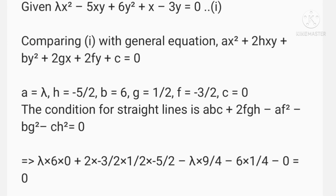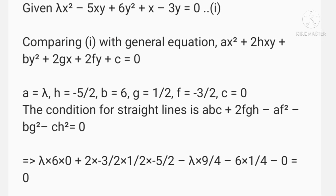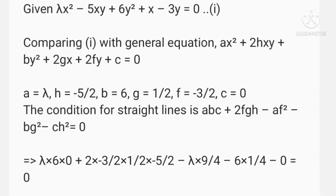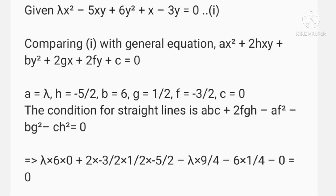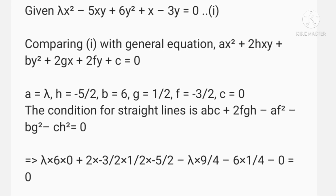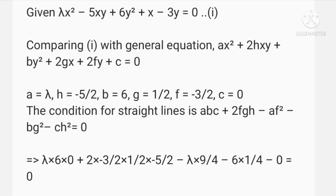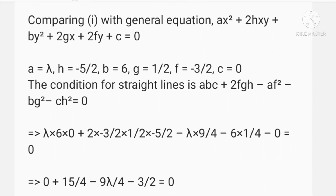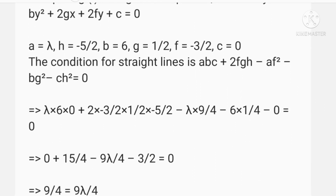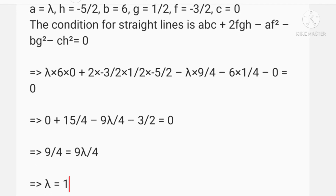The condition for a pair of straight lines is abc + 2fgh - af² - bg² - ch² = 0. Substituting the values of a, h, b, g, f, and c, we get λ = 1.